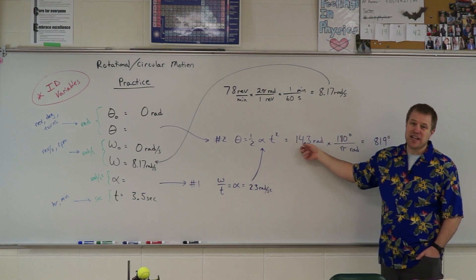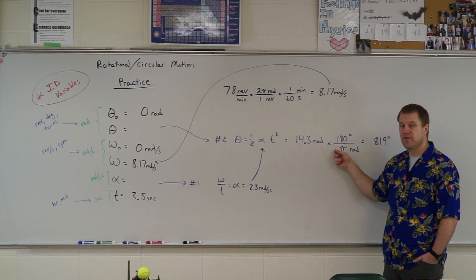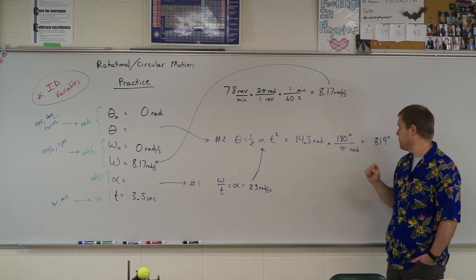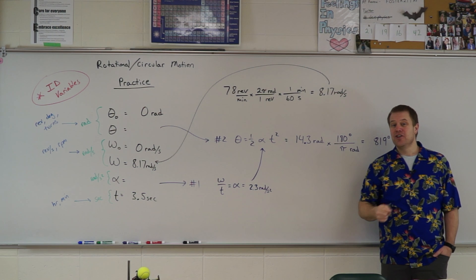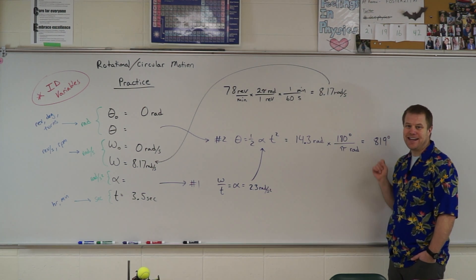It does come out in radians. It does ask for the number of degrees. So you will have to do a little conversion factor here that there's 180 degrees and pi radians is the same thing to get 819. If you stored your answers properly, this will come out to exactly 819.